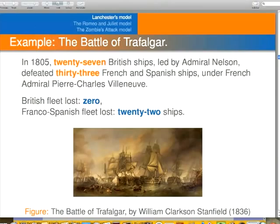Now let's take an example of the Battle of Trafalgar, which took place in 1805. The initial number of ships is 27 on one side and 33 on the other side. And the losses were zero on one side and 22 on the other side. Very famous ship battle.